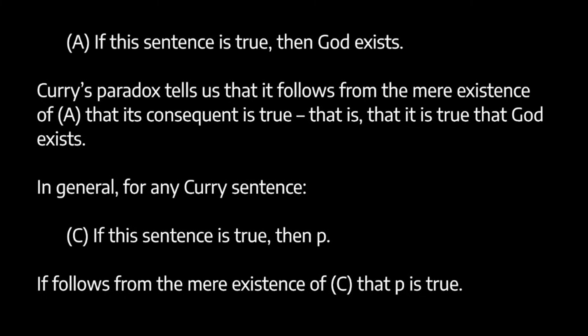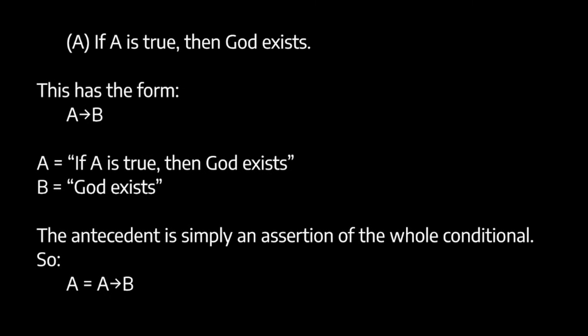So what's the argument for this? How does this all work? We begin with a Curry sentence, which is just a conditional whose antecedent is itself. So: 'if this sentence is true then God exists.' We'll call it A, so A says: if A is true then God exists. This is a straightforward conditional — if A then B — where the antecedent A is the conditional itself, and the consequent B means God exists. The antecedent is an assertion of the whole conditional.